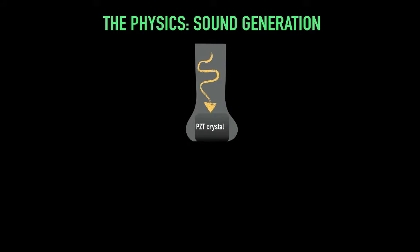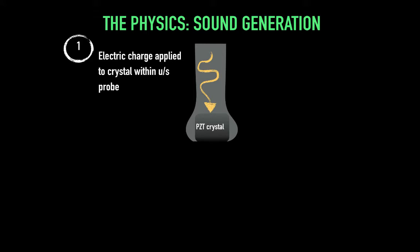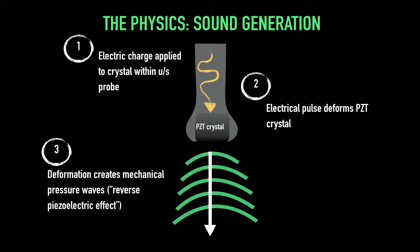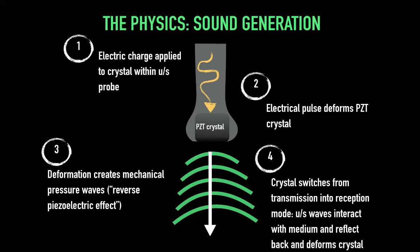Here we'll cover sound generation. An alternating electric current in the head of the probe affects piezoelectric material or crystal in the probe head. The mechanical properties of crystals determine the range of sound wave frequencies produced. When electric charge is applied to the crystal, the material expands and contracts, generating mechanical strain — leading to mechanical pressure waves in what's called the reverse piezoelectric effect. To receive the signal, the crystal switches from transmission into reception mode. Ultrasound waves interact with the medium and tissue boundaries, reflect back, causing crystal deformation and generation of electrical current — the direct piezoelectric effect. This cycling repeats several thousands of times per second, creating a real-time image.